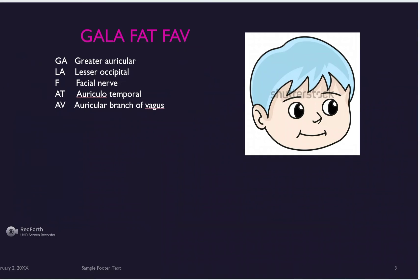Now let's go to the mnemonic. I've created the mnemonic 'GALA FAT FAV.' Our cheeks are very near to the ear, and we all like chubby cheeks — so keeping that in mind, 'gala' means cheeks in Hindi, 'fat' means chubby, and 'fav' means favorite. So: GA = Greater Auricular, LE = Lesser occipital, F = Facial nerve, AT = Auriculotemporal, AV = Auricular branch of Vagus.